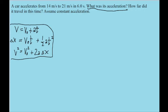We're told that the car accelerates from 14 meters per second to 21 meters per second. So it starts at 14, which means that v-naught, its initial velocity, is 14 meters per second.